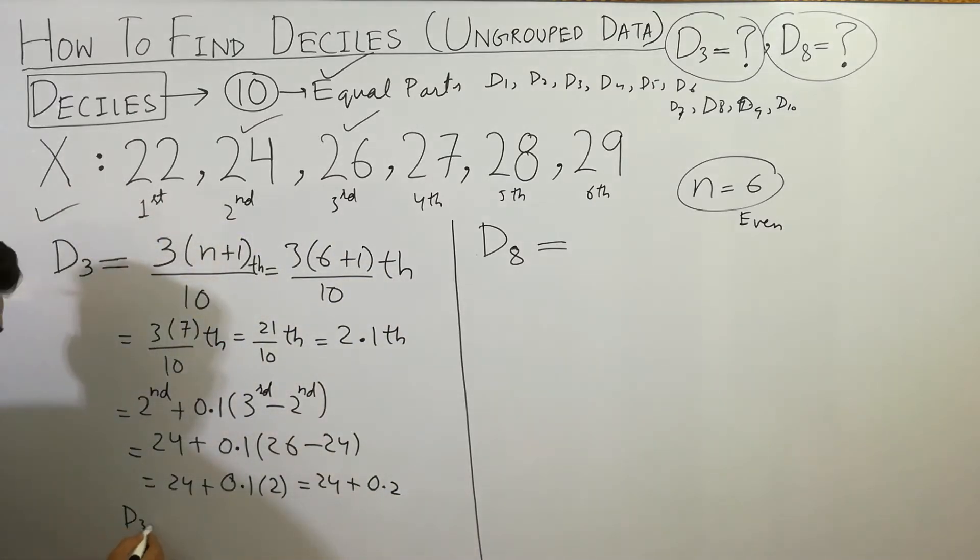We will get the value here, so d3 is equal to 24.2. So I hope that you have cleared the concept of how to find deciles and what are the deciles.